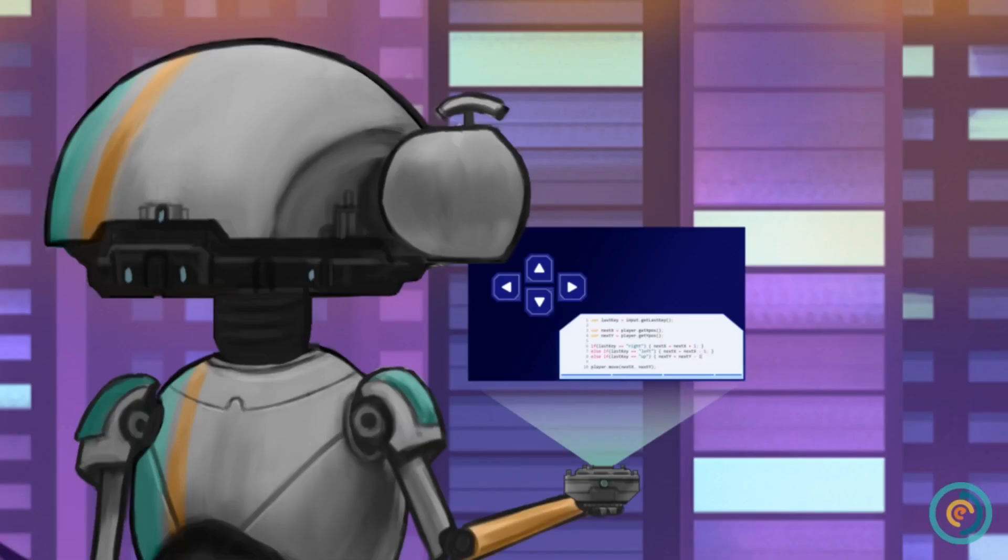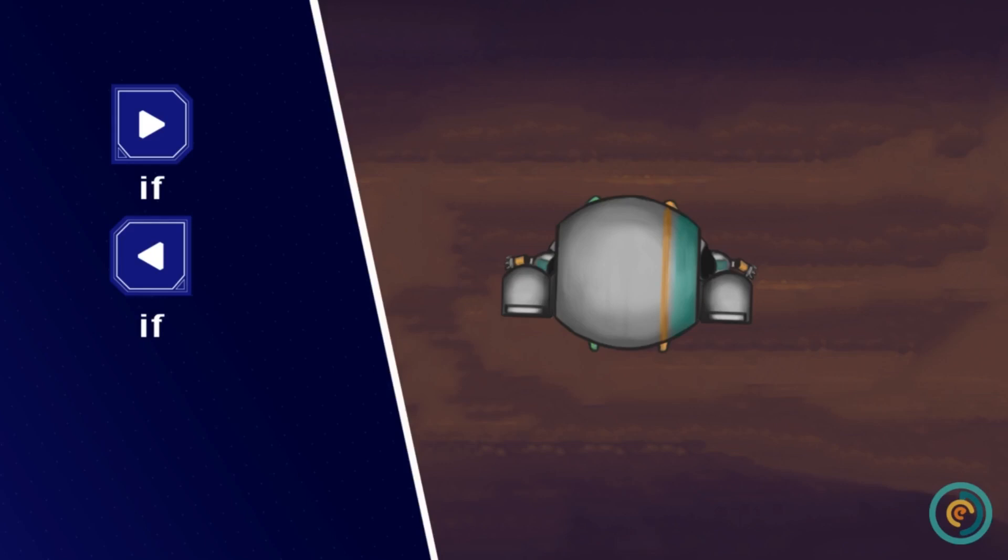Now it's your turn. Replace the second if statement with an else if and add another else if statement to check for the up key.